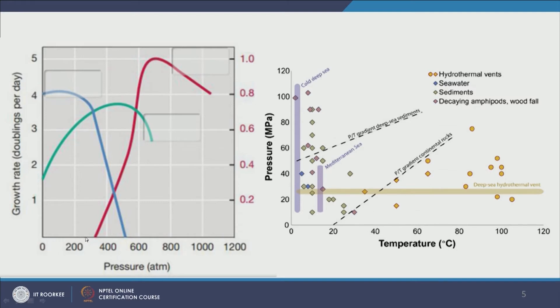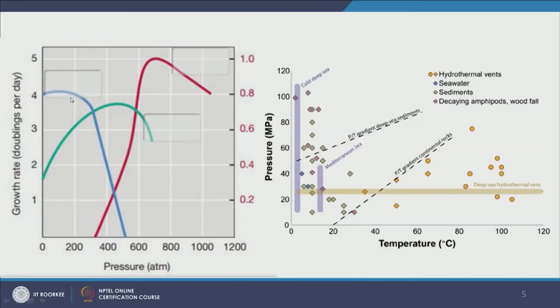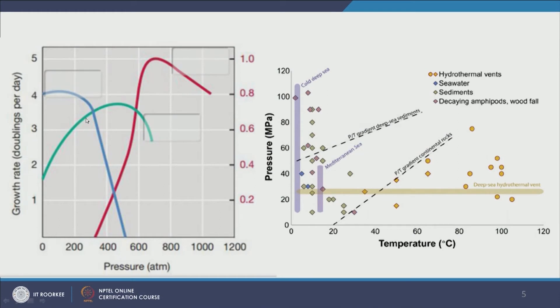Looking at the left panel: microbes whose growth rate does not drop much — or even increases — around 100 atmospheres are called piezotolerant microbes. They survive high pressure, but once pressure exceeds 300 atmospheres their growth rate drops sharply. In green, piezophilic microbes actually love high pressure: their growth rate is lower at low pressure, increases as pressure rises, peaks around 500 atmospheres — nearly 4 doublings per day — and then drops as pressure increases further.